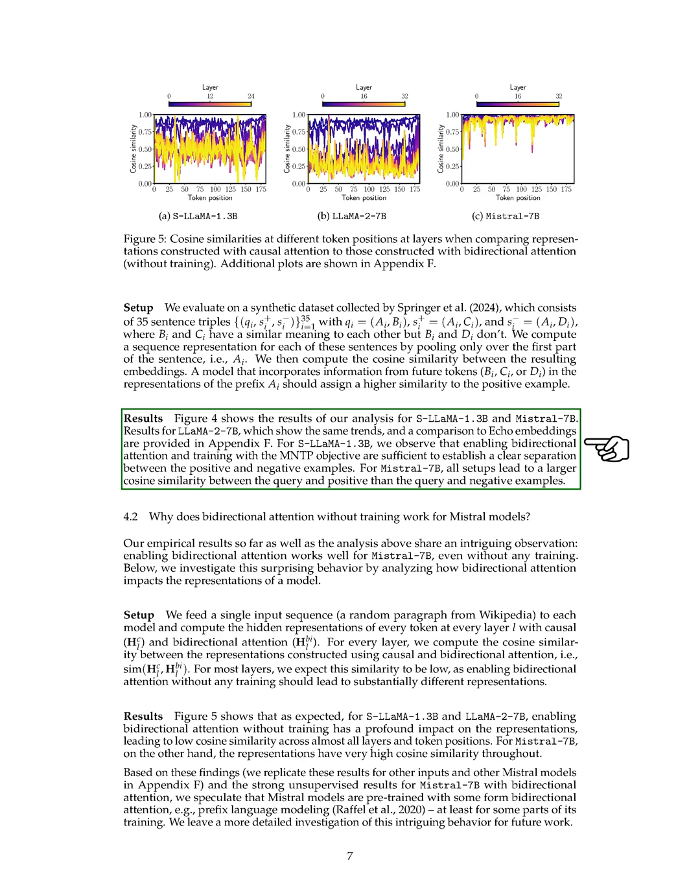We present the results of our analysis for S-LLaMA-1.3b and Mistral-7b. For S-LLaMA-1.3b, we noticed that enabling bidirectional attention and training with the MNTP objective helped to clearly distinguish between positive and negative examples. For Mistral-7b, all configurations result in a higher cosine similarity between the query and positive examples compared to negative examples. We explore why bidirectional attention works for Mistral models even without training by analyzing how it influences model representations. We input a random paragraph from Wikipedia to each model and calculate the hidden representations of every token at each layer using causal and bidirectional attention, then compute the cosine similarity between these representations.